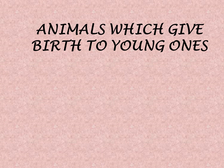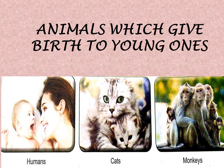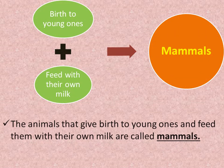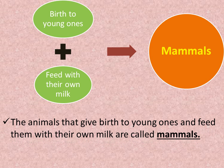Animals which give birth to young ones — like humans, cats and monkeys — give birth to small babies and then develop them. The animals which give birth to young ones and feed them with their own milk are called mammals. Examples: human beings, dogs, cats, etc.